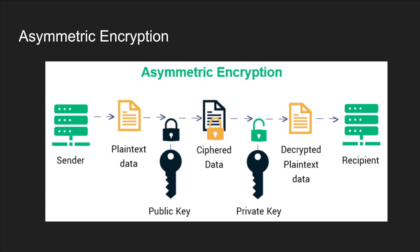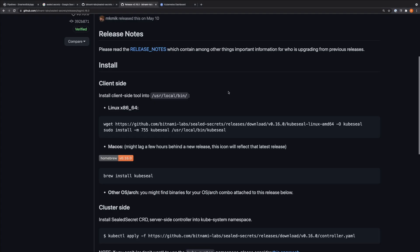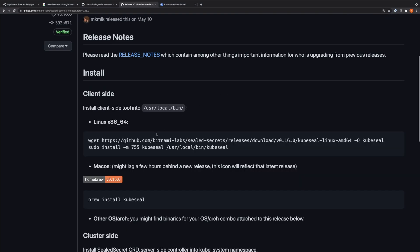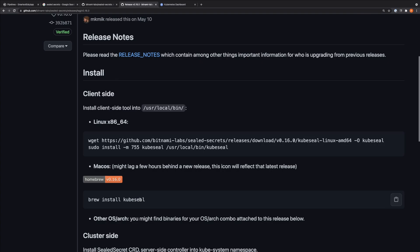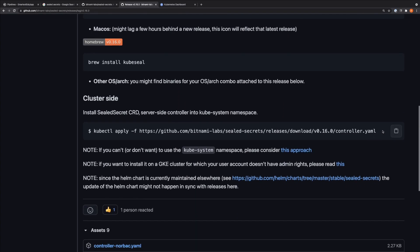Sealed secrets have two prime components. One is a client — kubeseal — which takes a normal secret, gets the public key from the cluster, and encrypts it to produce the sealed secret manifest file. The other component is the controller which runs within the cluster. It sees the encrypted data and uses the private key present in the cluster to decrypt it.